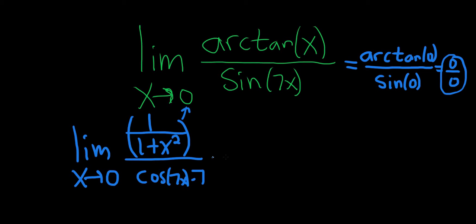Okay, at this point we can go ahead and plug in zero. And when we do that, we drop the limit sign. So this is one over one plus zero squared, so that's just one over cosine of zero times seven.